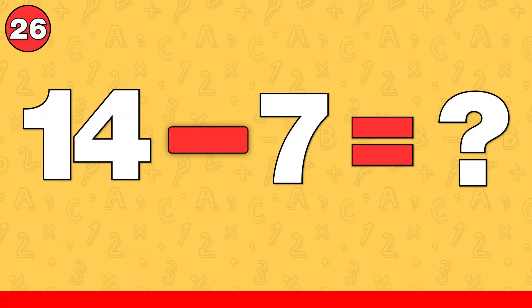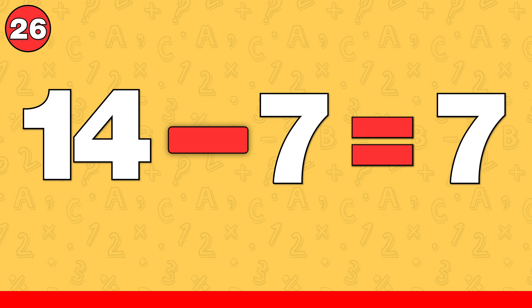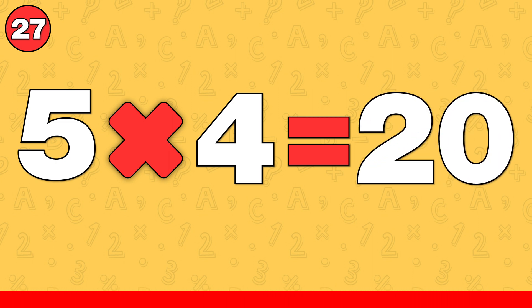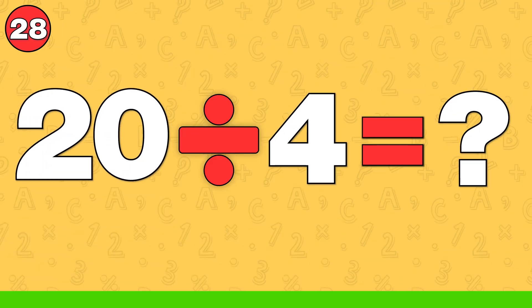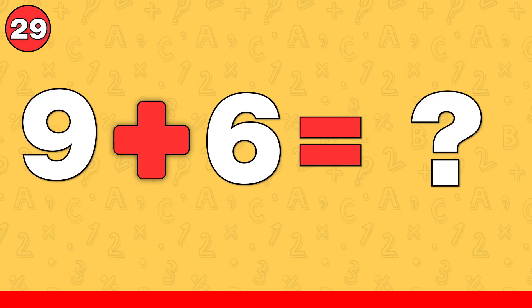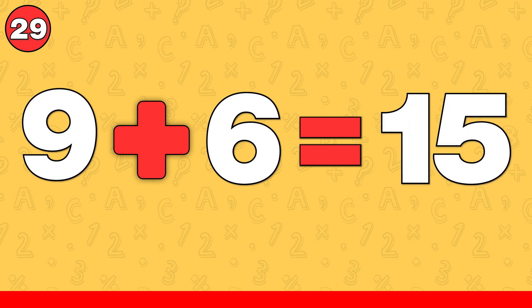14 minus 7. The answer is 7. 5 times 4. The answer is 20. 20 divided by 4. The answer is 5. 9 plus 6. The answer is 15.